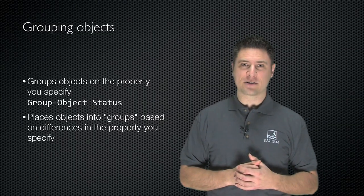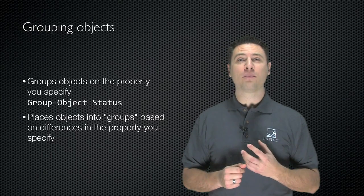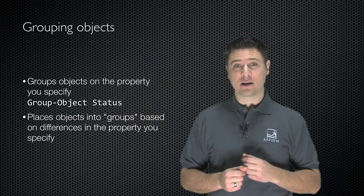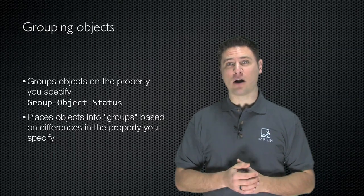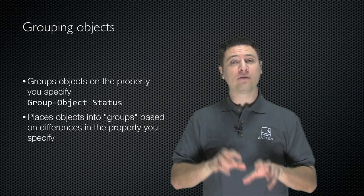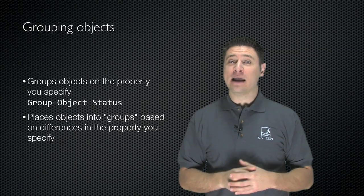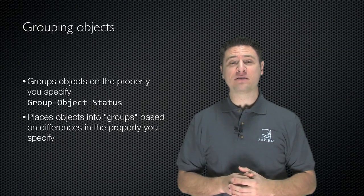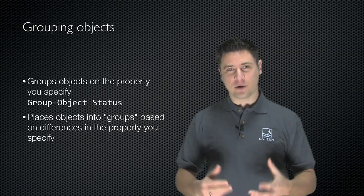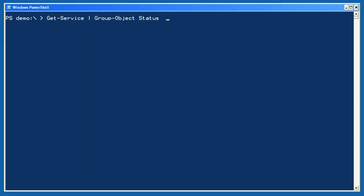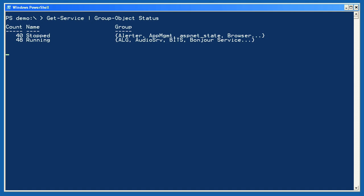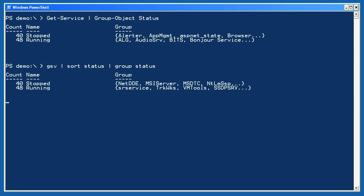Let's talk about grouping objects. The idea is to group objects on whatever property you specify using the Group-Object cmdlet. For example, you might specify the status property. That's going to look at the status property for every object and put those into different groups based on that property — every object with the same value winds up in its own group. Grouping is pretty much like sorting. I'll get a bunch of services and group them on their status property. You can see two groups and how many objects were put into each group. Sorting doesn't have any effect on this; sorting then grouping gives the same results.